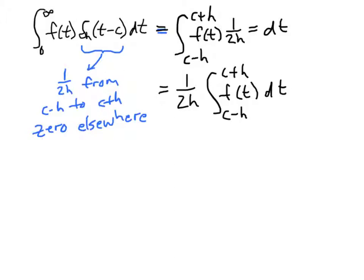Now it turns out, you may or may not recognize this, the length of the interval over which we're integrating is 2h. And when we integrate a function over an interval and then divide by the length of the interval, we're actually finding the average value of the function.